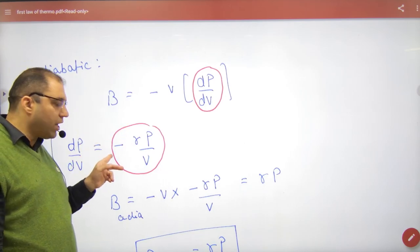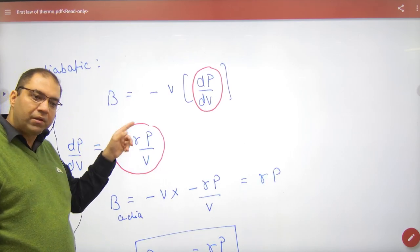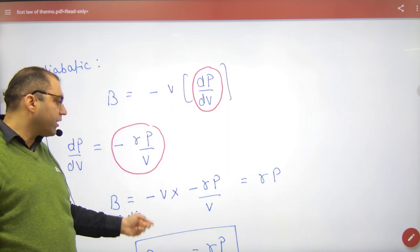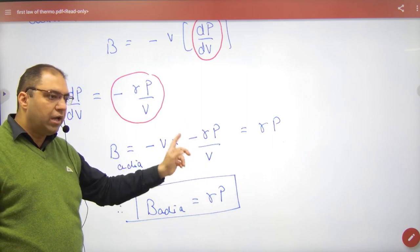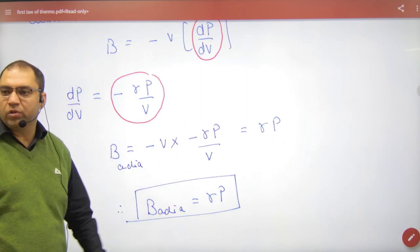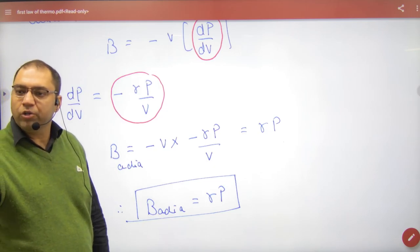So adiabatic slope, what was it? Minus gamma P by V. In this, gamma extra came. So in place of dP by dV, what will we put? Minus gamma P by V. Minus minus V, so V cancels, then answer is gamma times P. So remember this bulk modulus, isothermal is what?